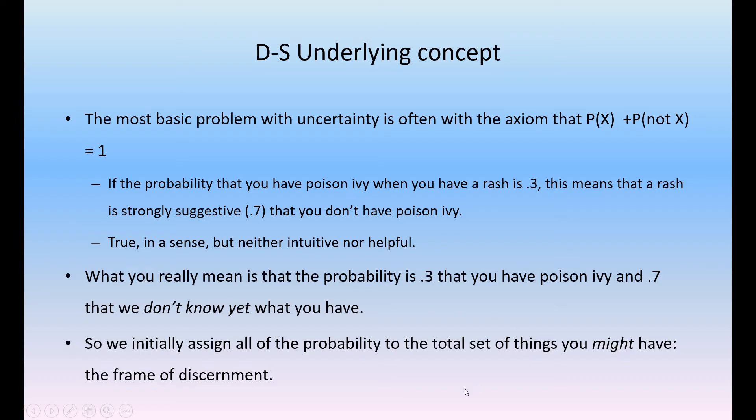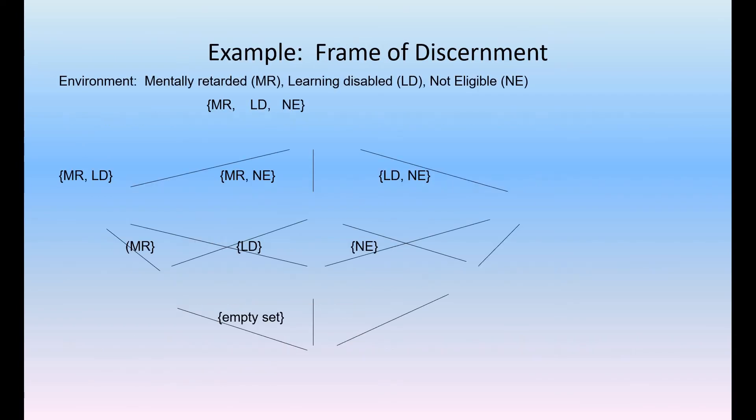If you have poison when you have rash is 0.3, and you do not have poison when you have rash is 0.7, so 0.3 plus 0.7 is obviously 1. True in a sense, but neither intuitive nor helpful. What you really mean is that the probability is 0.3 and 0.7 that we don't know yet. So we initially assign all the probability to the total set of things we use, the frame of discernment.